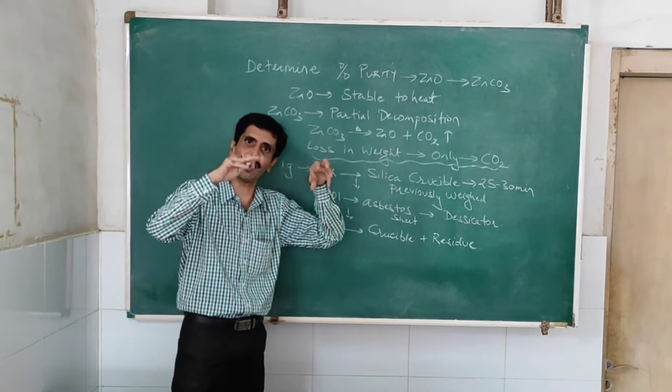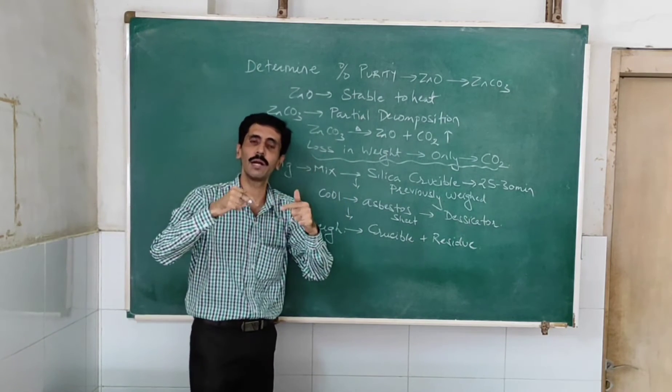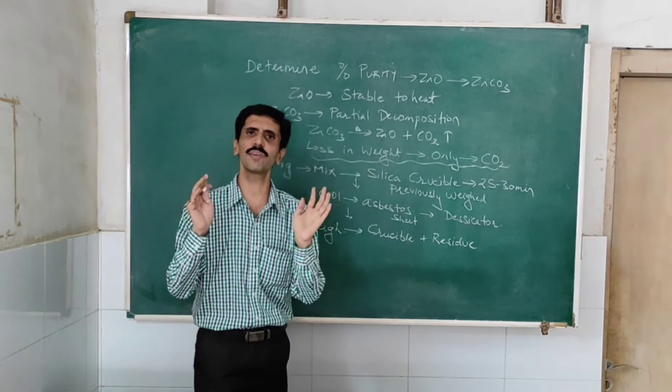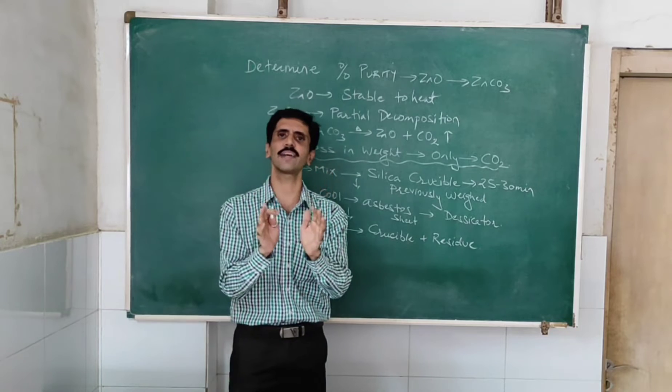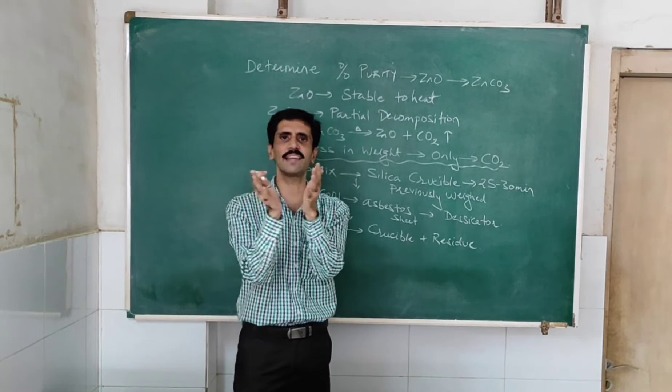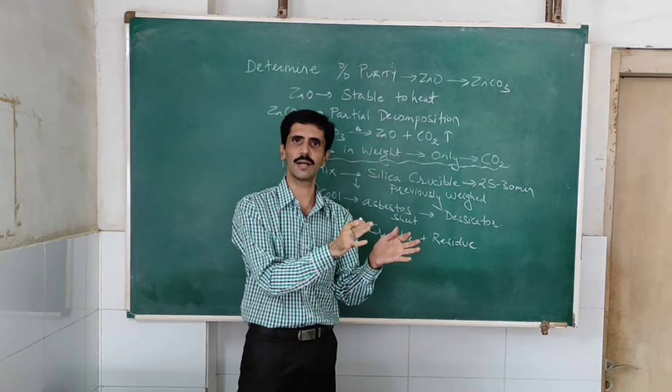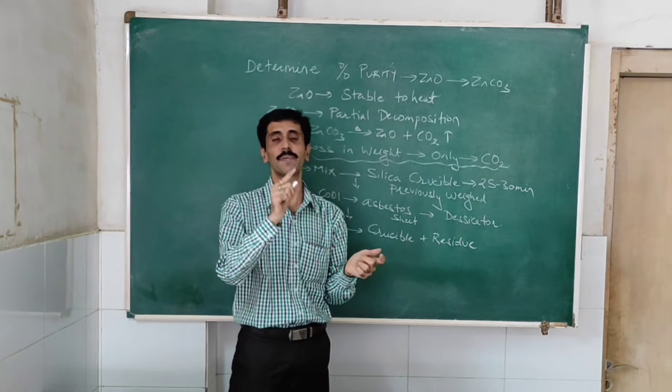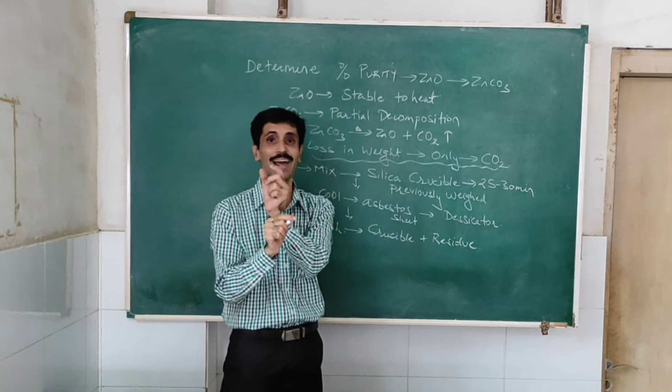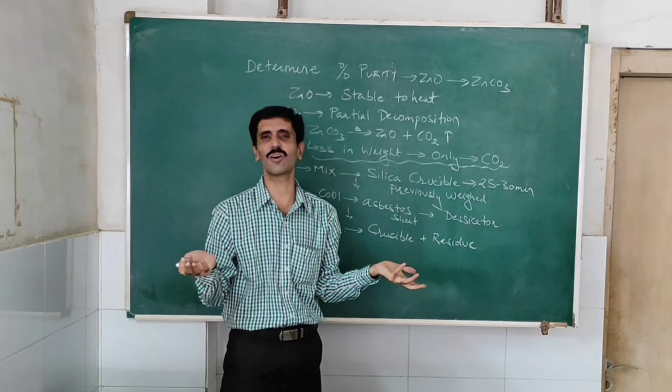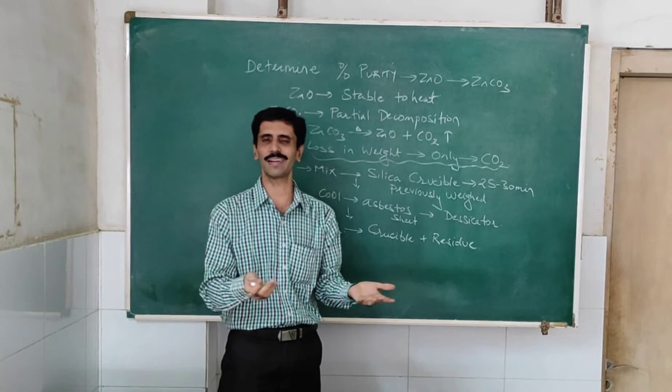So on the basis of the loss in weight, we will be able to find out the percentage of zinc carbonate. Also, we are very sure that the mixture contains only zinc carbonate as well as zinc oxide. So once we come to know the percentage of zinc carbonate, you subtract that percentage from 100 and you get the percentage of zinc oxide. That's a very simple calculation.